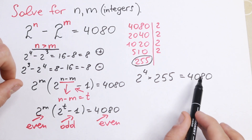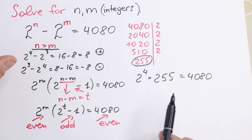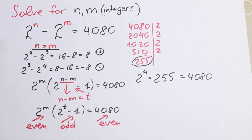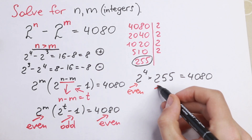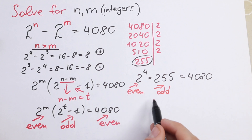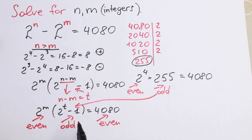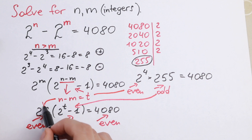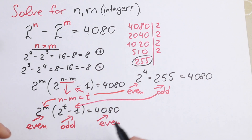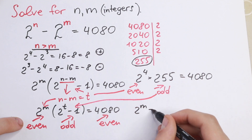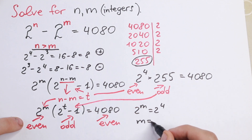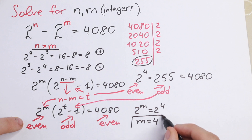We can see that 2 to the 4th power is the even part and 255 is the odd part — matching the structure of our equation. So 2 to the power m equals 2 to the 4th power, which gives us m equals 4.